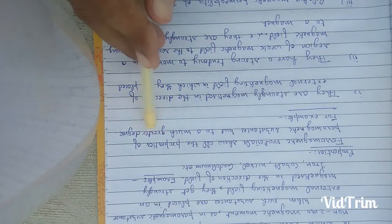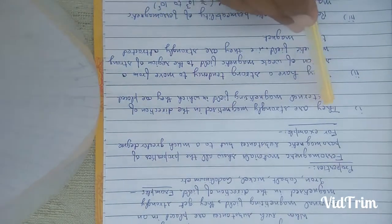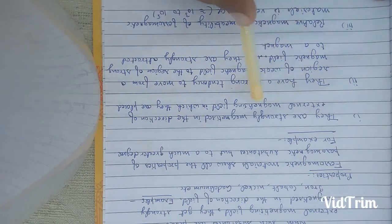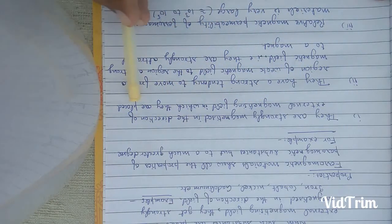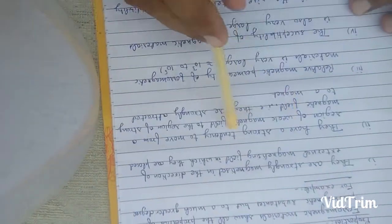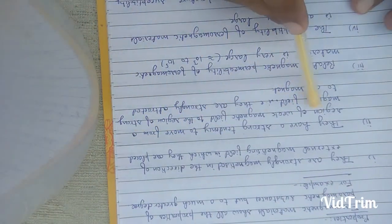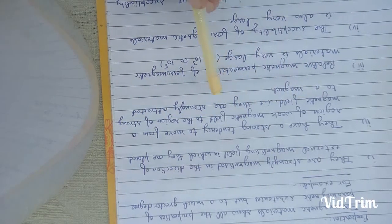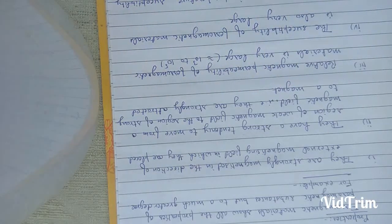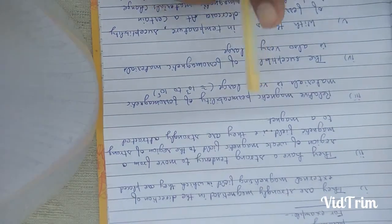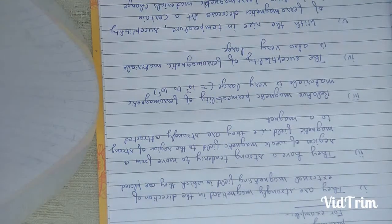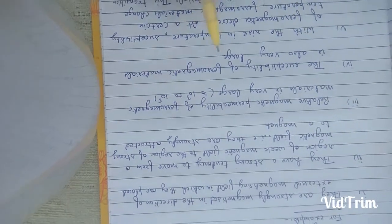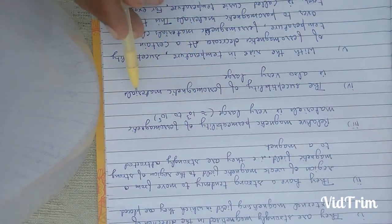For example, ferromagnetic substances are strongly magnetized in the direction of the external magnetizing field in which they are placed. They have a tendency to move from a region of weak magnetic field to a region of strong magnetic field, meaning they are strongly attracted to a magnet. Third, the relative magnetic permeability of a ferromagnetic material is very large, approximately 10³ to 10⁵.